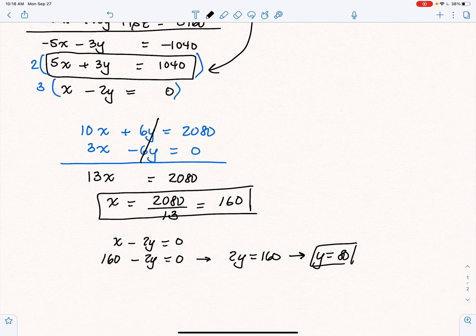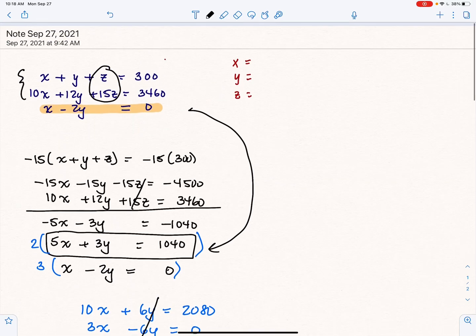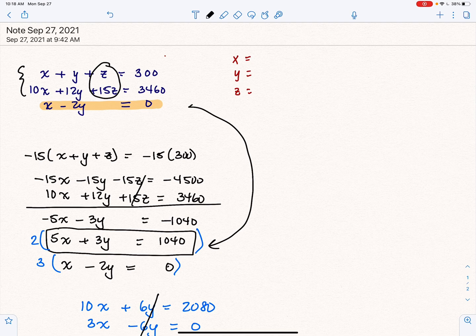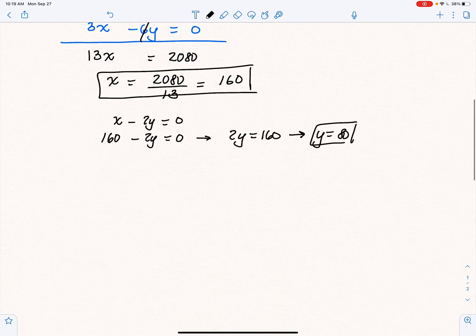And now we go back to one of the equations with x, y, and z. So if I scroll back up, notice the first equation looks simplest to work with. So I'm going to use that one. You could use the second one if you wanted to. You should still get the same answer. So with that said,